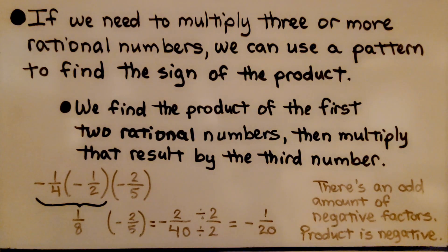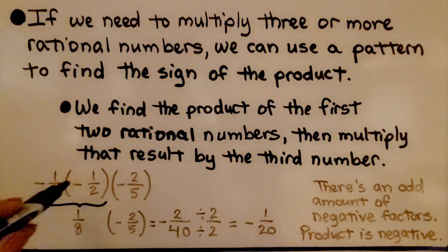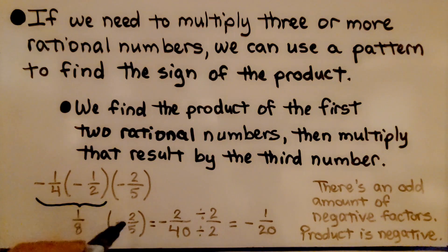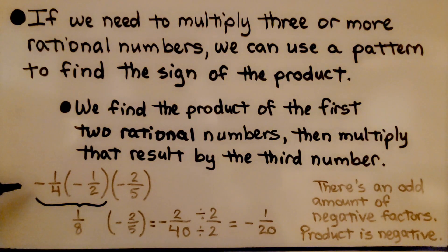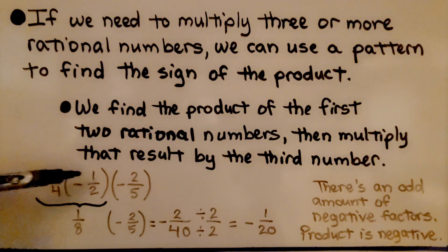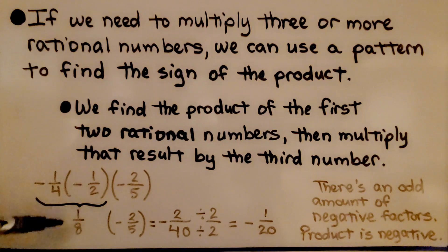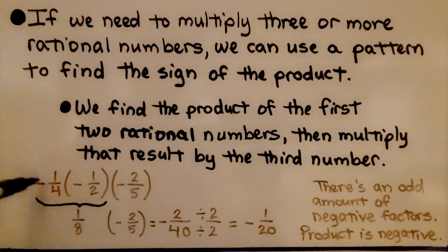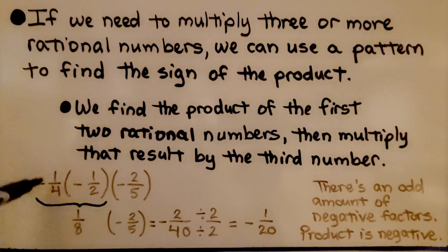We find the product of the first two rational numbers, then multiply that result by the third number. Here we have negative one-fourth being multiplied by negative one-half. We multiply straight across and get one over eight. We have two negatives, so this is going to be a positive — we have like signs.